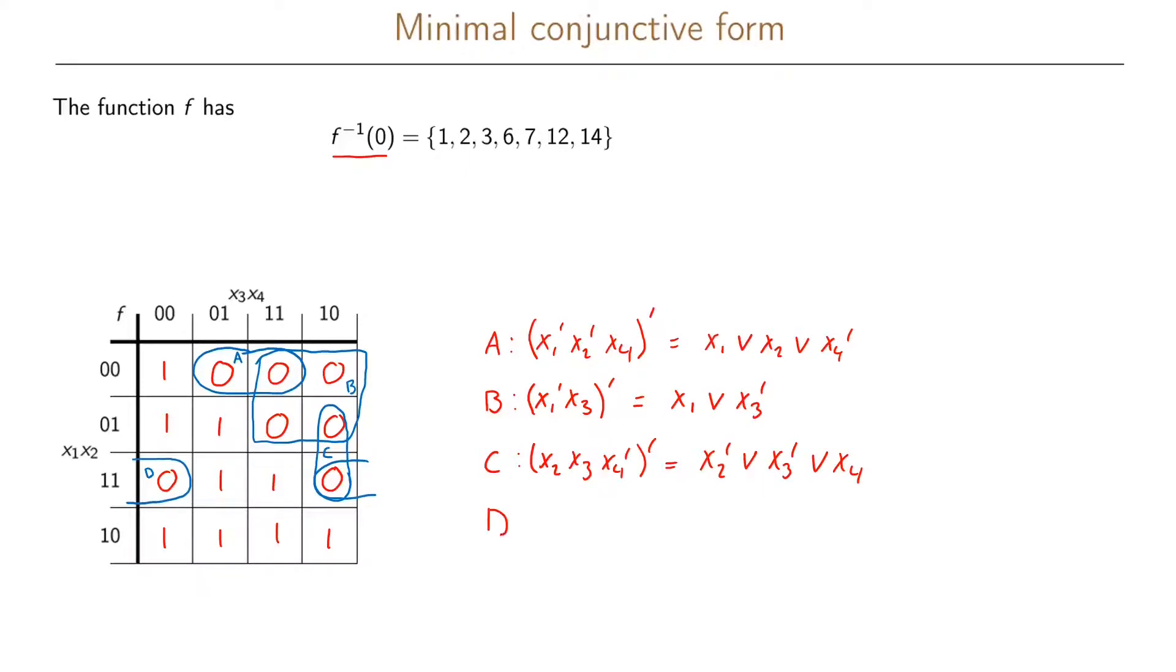And the final one D we can write as x1, x2, x4 prime. Then we prime this and we get x1 prime or x2 prime or x4.